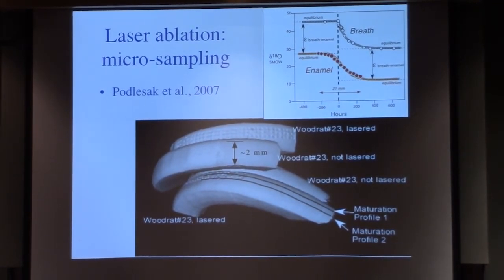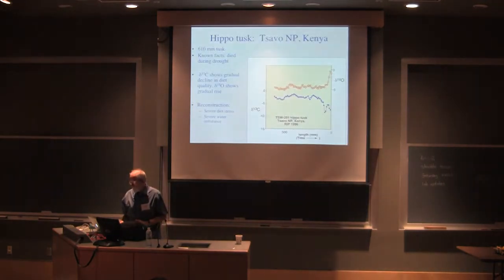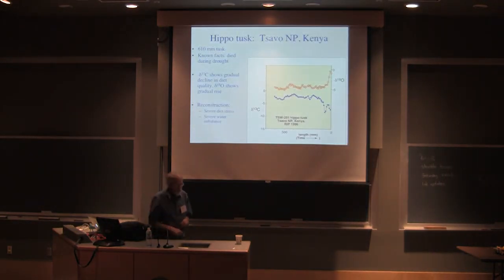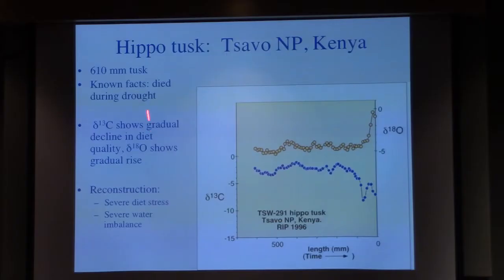For one example, this is a hippo that I was working on. We knew this animal died during a drought. Here's the delta C-13 - we can see it had something relatively constant diet, gradual decline, then almost a pure C3 diet. Something happened here at the end and then it died. Here's the delta O-18 - something bad happened to this guy. The water must have gone somehow bonkers.